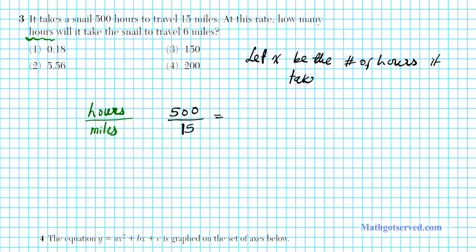We're looking for x hours for six miles. x goes on top because it's hours, and 6 goes on the bottom for miles. To isolate x, multiply both sides by 6, and that 6 divides out. x equals 6 times 500 over 15, which is 3000 divided by 15. 15 goes into 30 twice, so we have 200. 200 hours is how long it will take the snail to cover six miles. The answer is option number four.